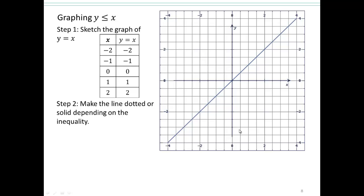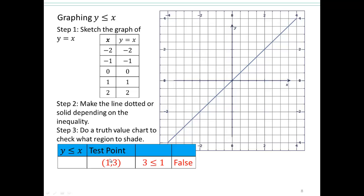But you don't have to take my word for it. You can always do a truth table and see what happens. Pick a test point. We'll pick 1, 3. So we have x equals 1 and y equals 3. So that would be right there. The y-coordinate is 3, x is 1, and 3 less than or equal to 1 is false.